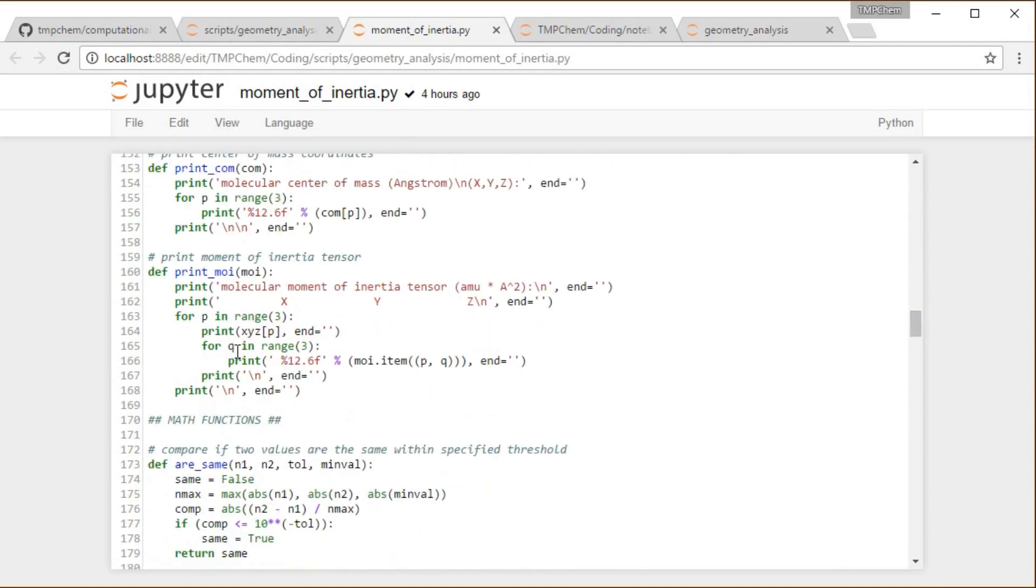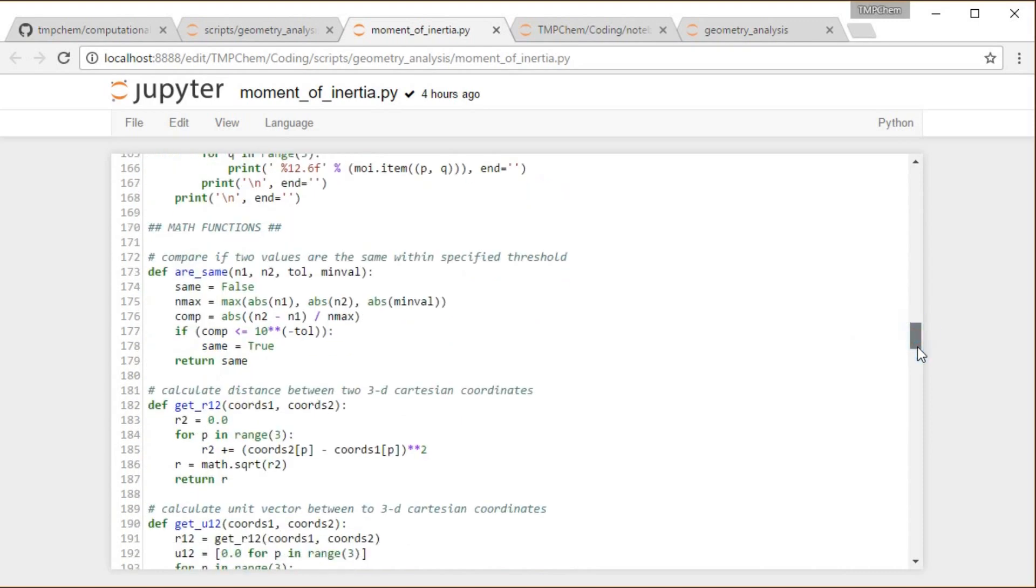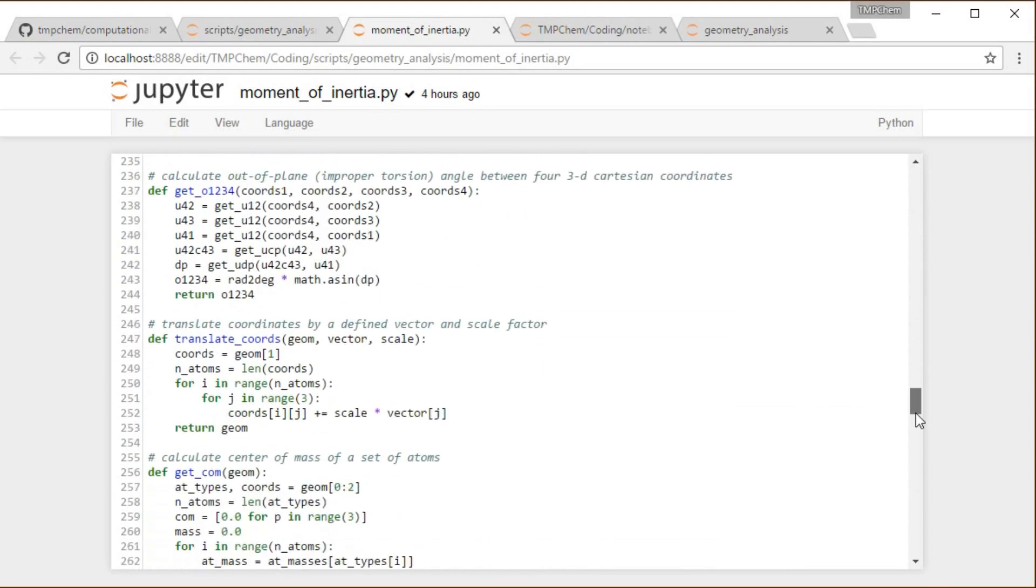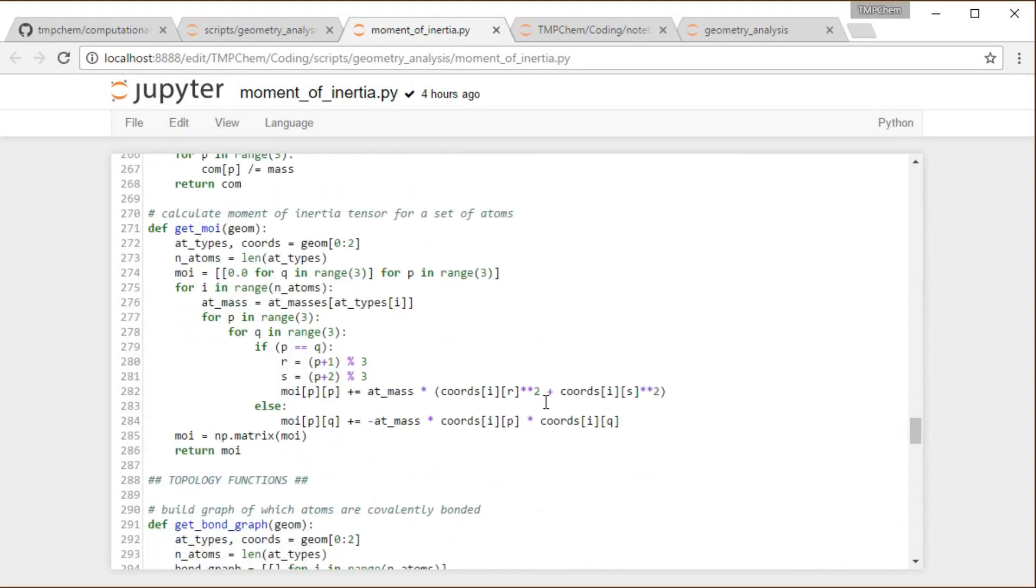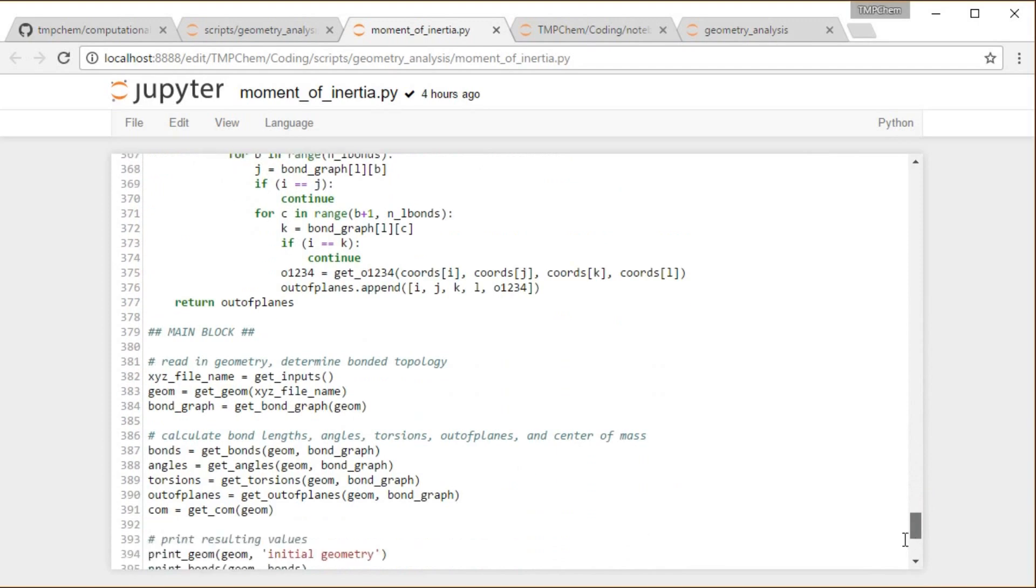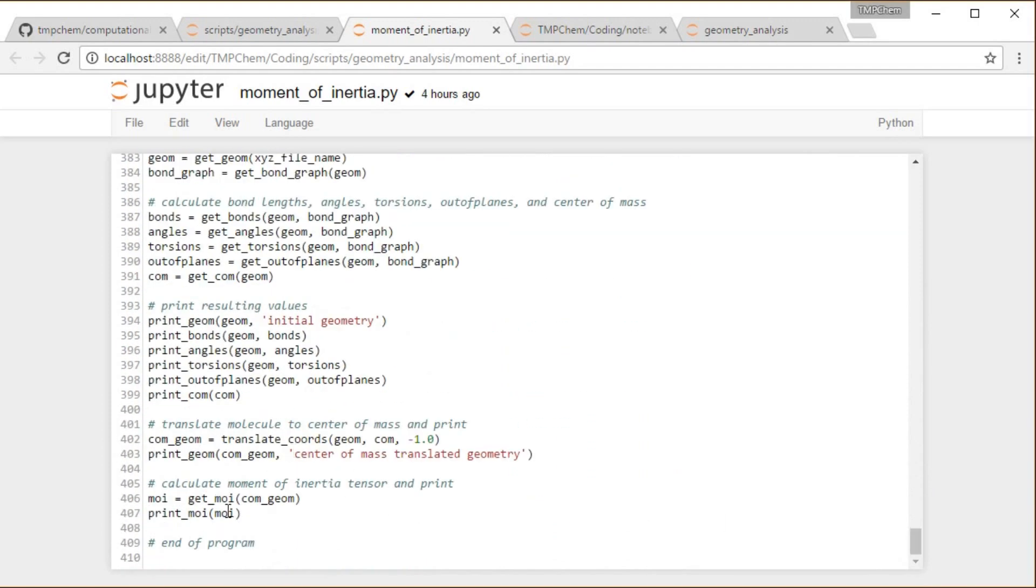I've got that open in my Jupyter notebook here. I have a print moment of inertia function in there. There's the coordinate squared plus coordinate squared, the off-diagonal elements there, bunch of other stuff, and then just adding to the main block some new printing.